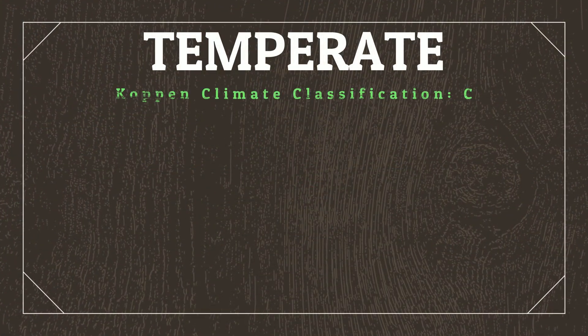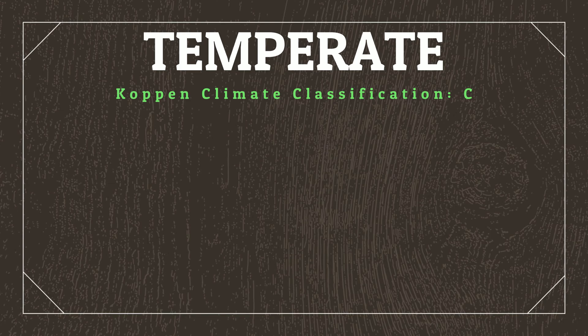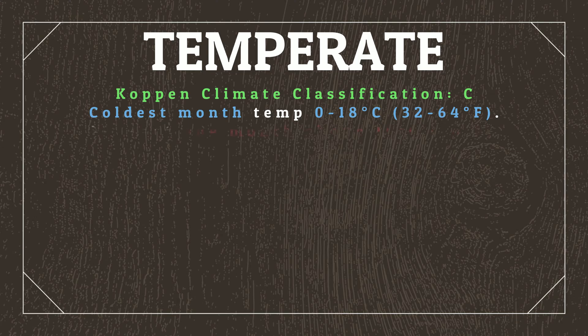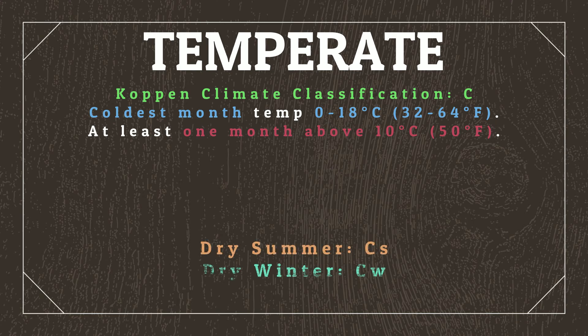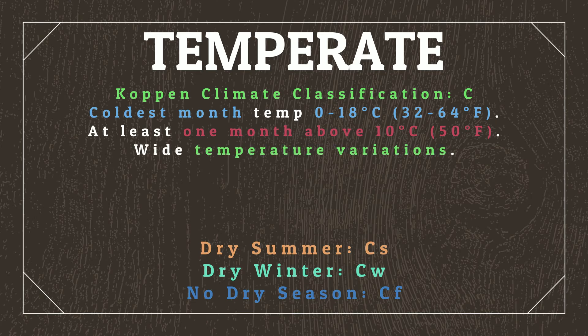As subtropical climates are the first climate of this series that are considered temperate, let's quickly establish what temperate means in climatological terms. Temperate zones, according to the Koppen Climate Classification System, are categorized as areas where the coldest month has temperatures between 0 and 18 degrees Celsius, and at least one month where temperatures exceed 10 degrees Celsius. They are differentiated between climate zones that have a dry summer, a dry winter, or no dry season at all.